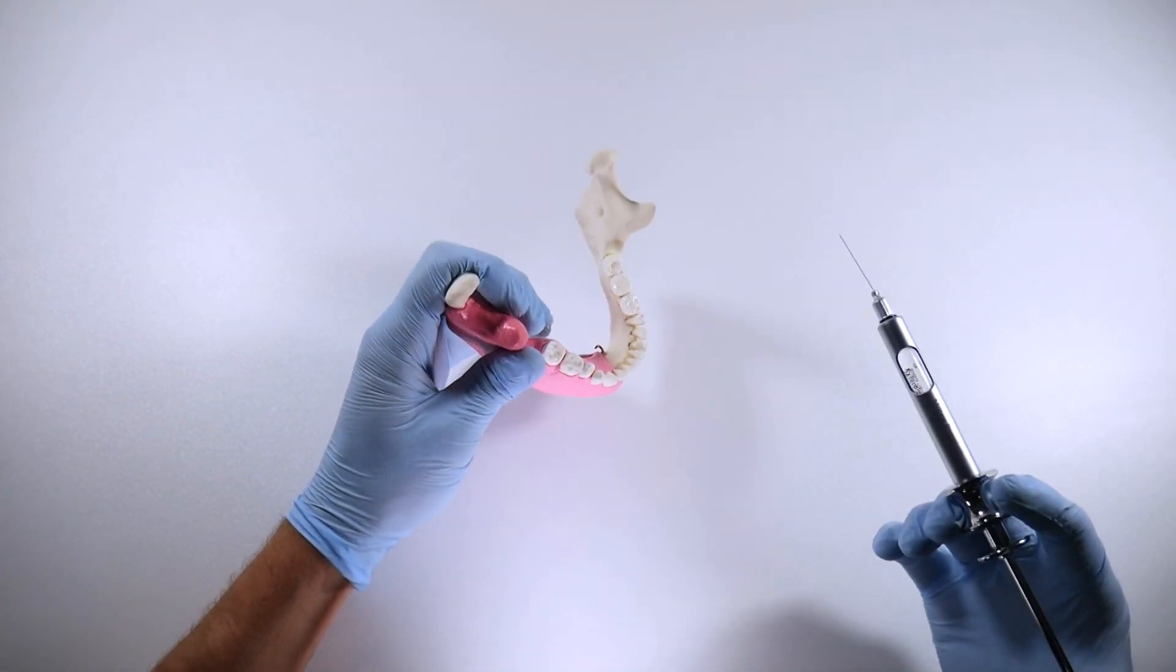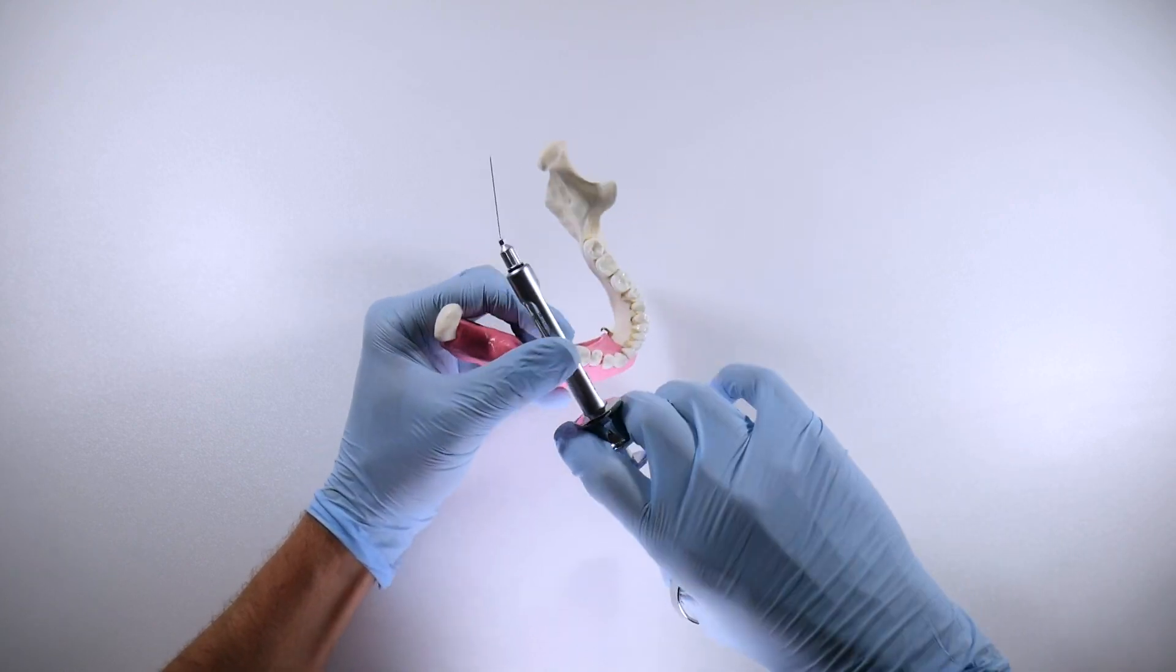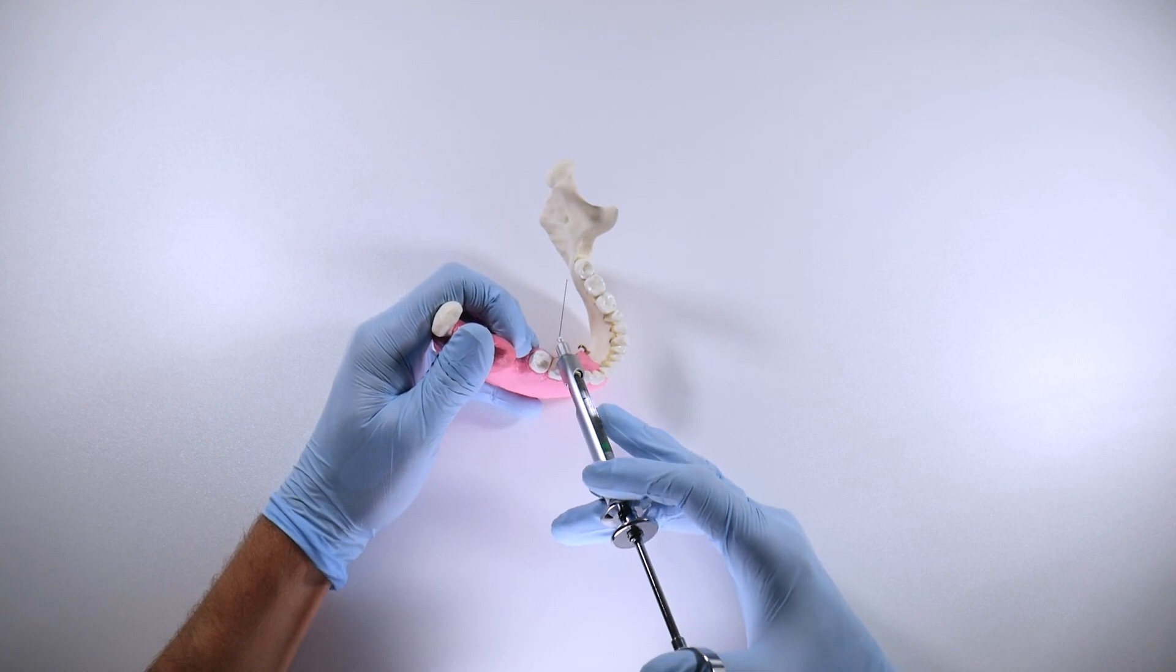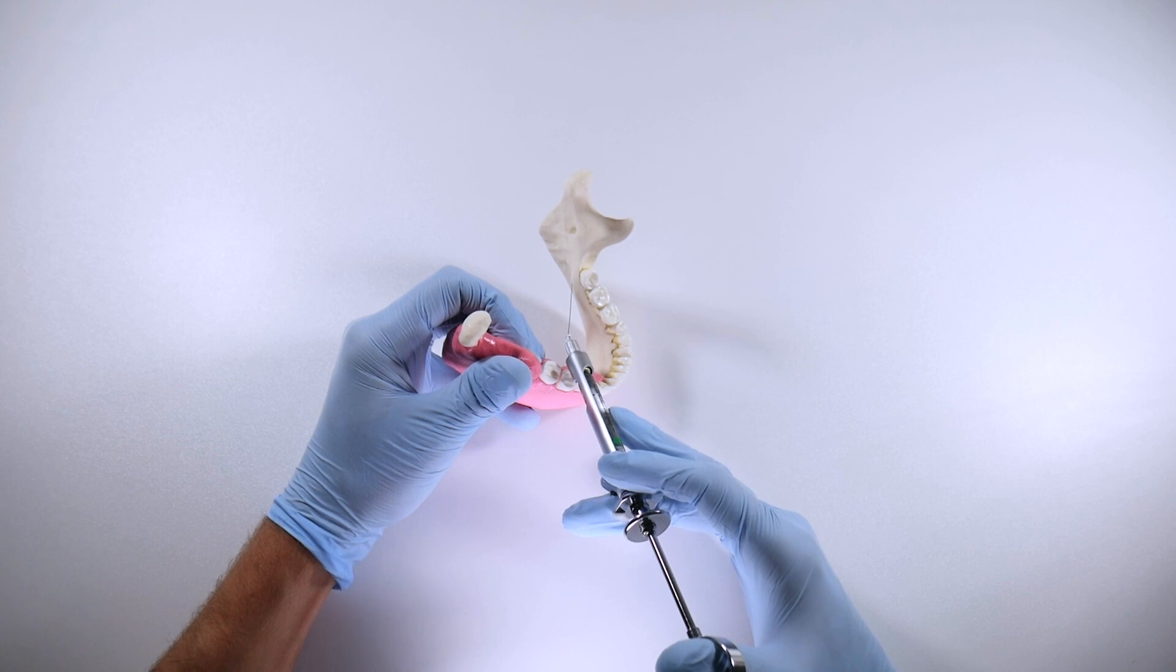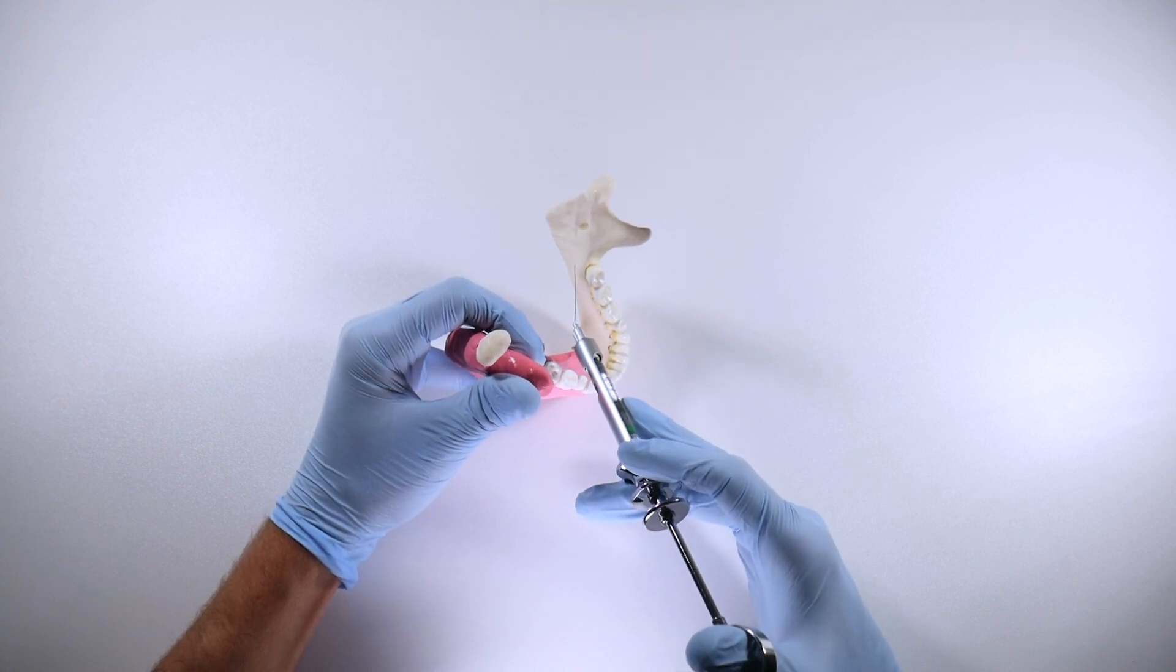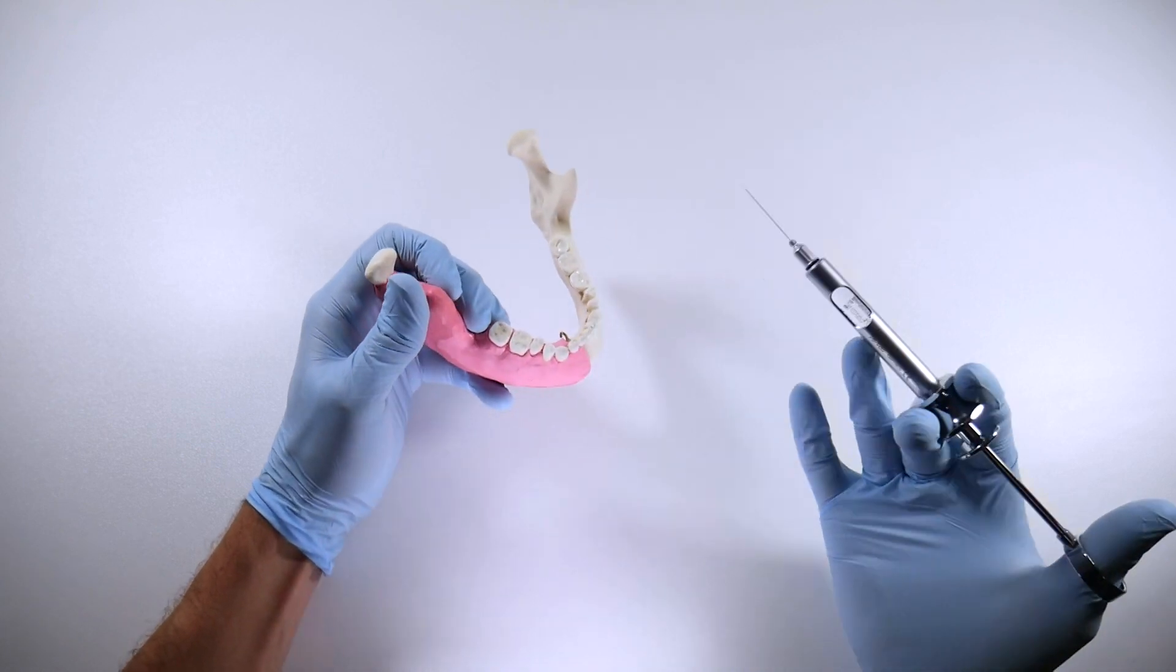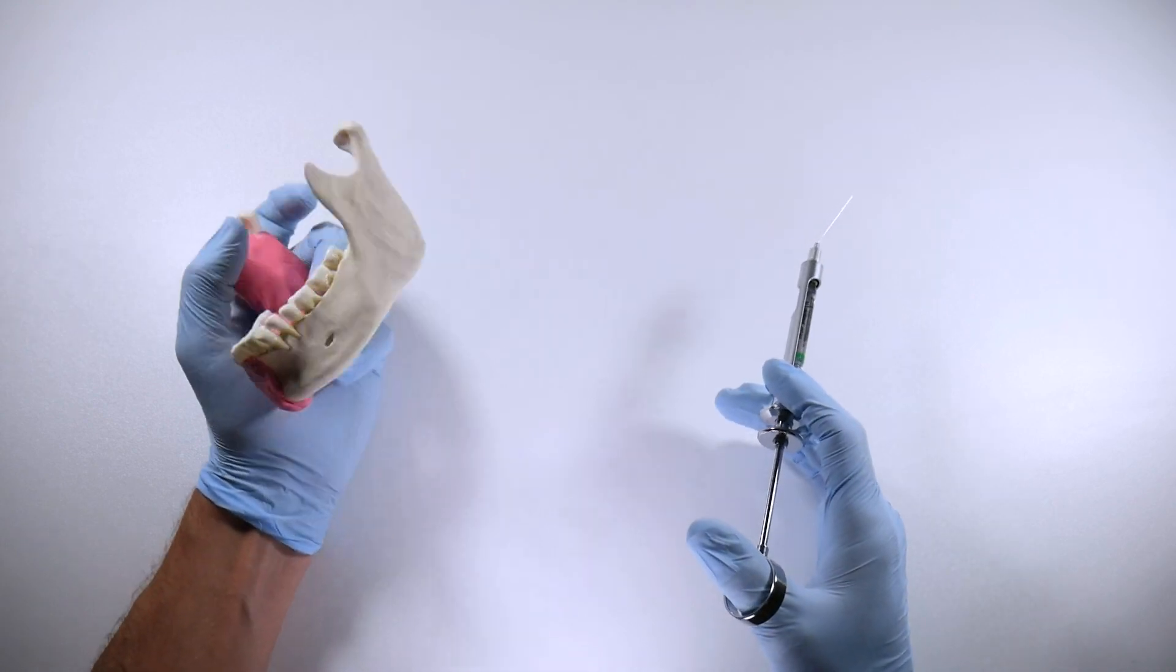If we go back to the mandible, another area I'll do this is if I'm infiltrating lingually. Sometimes I'll be taking out an impacted third molar. I'll put a little bit of a bend in the needle, same thing, usually a short needle, which allows me to get under where that mylohyoid ridge would be. That's a great spot to anesthetize these third molar roots which are often perforating through the lingual plate. If you take teeth out, that's a good tip to get patients a little bit more numb.